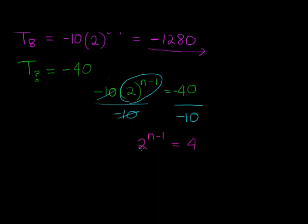So I've got 2^(n-1) = 4. Now this is not too difficult, we can figure this out. 2^2 = 4, so whatever is here in the exponent must equal 2. So n minus 1 must equal 2, which means the only way that is possible is if n equals 3. In other words, term 3 is equal to negative 40.